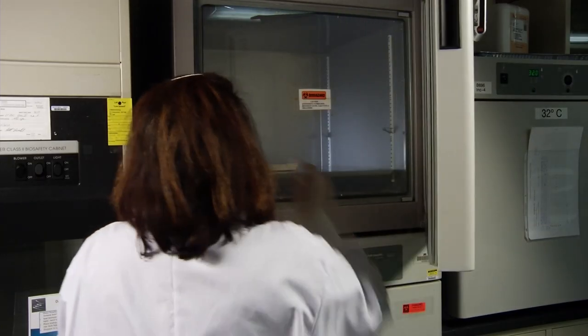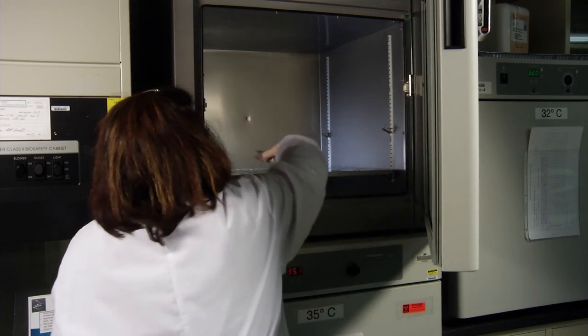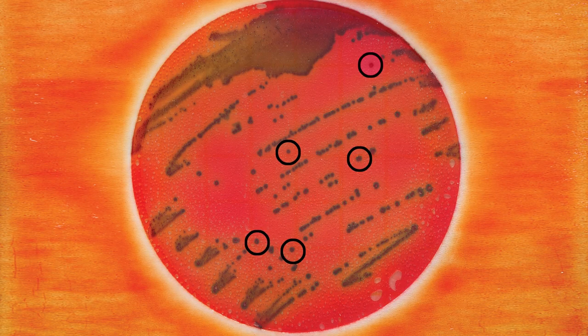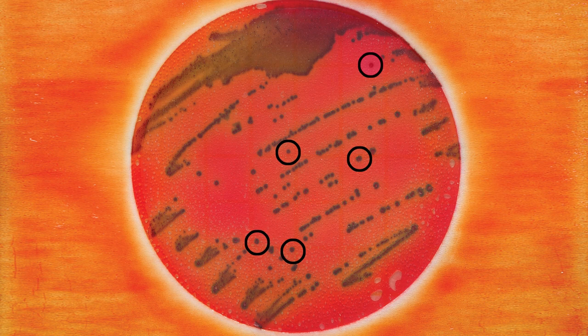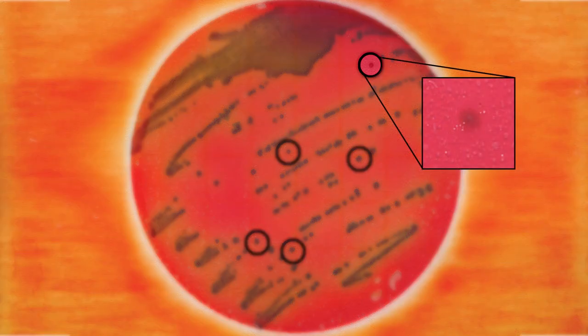After incubation, remove the disc to plate from the incubator and proceed with reading the results, focusing only on the circled colonies. Colonies that are green to blue, blue to dark blue or black or have a blue precipitate around them are biochemically confirmed positive for Salmonella species. Colonies that remain the same red, dark red or brown color without a blue precipitate are negative for Salmonella species.